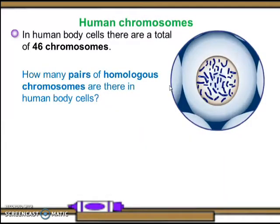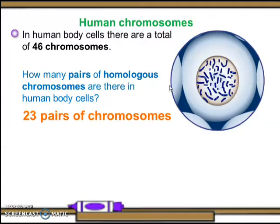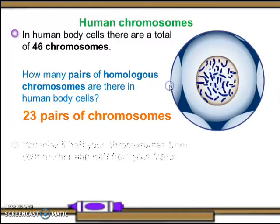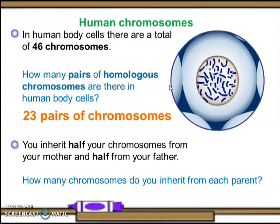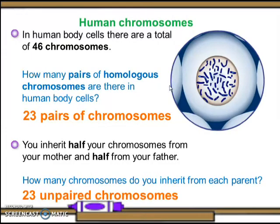So this is the chromosome from the female parent and this is the chromosome from the male parent. In human body cells, there are a total of 46 chromosomes — 23 pairs of homologous chromosomes. You inherit half your chromosomes from your mother and half from your father — 23 unpaired chromosomes from each parent.